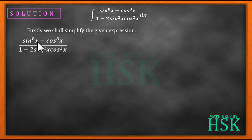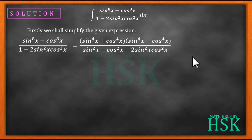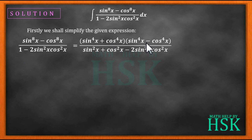We apply the formula of a² - b² in the numerator by assuming sin⁸x as (sin⁴x)² and cos⁸x as (cos⁴x)². This gives us (sin⁴x + cos⁴x)(sin⁴x - cos⁴x). For the denominator, we write 1 as sin²x + cos²x, giving (sin²x + cos²x - 2sin²x cos²x).